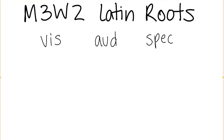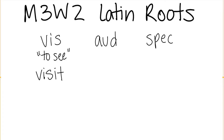Our first Latin root, vis, means to see. For example, if we have the word visit, our base word vis means to see. When you visit someone, you see them.